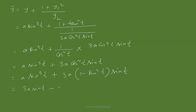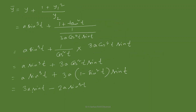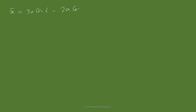Observing x̄ = 3a·cos t - 2a·cos³t and ȳ = 3a·sin t - 2a·sin³t, both expressions have the same structure, differing only in trigonometric terms (cos vs sin). Now we need to find a relation between x̄ and ȳ by eliminating the parameter t.